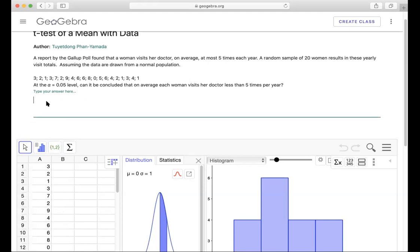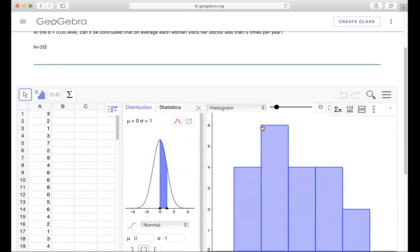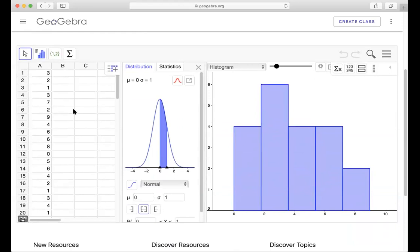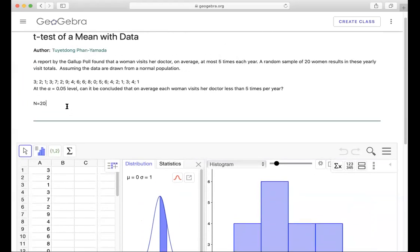We have a random sample of 20 women, that means n equals 20. If you go down the list, you also see 20 data points. Make sure the data are matching with what they say. They give you alpha equal to 0.05.